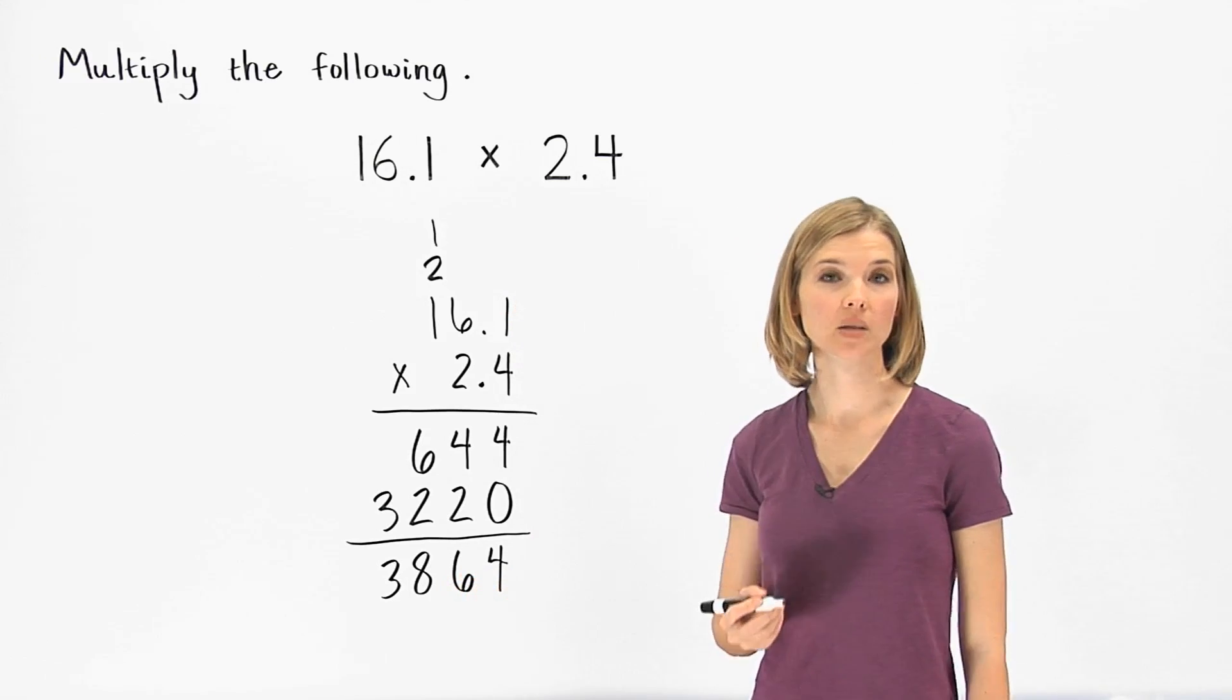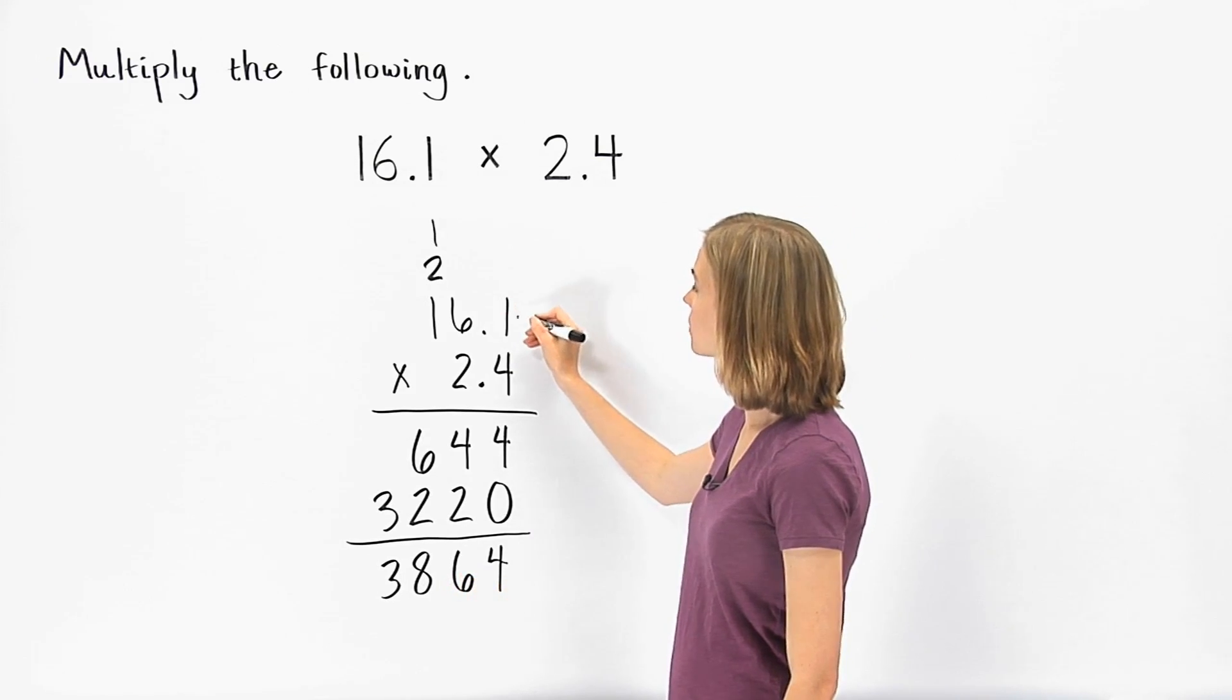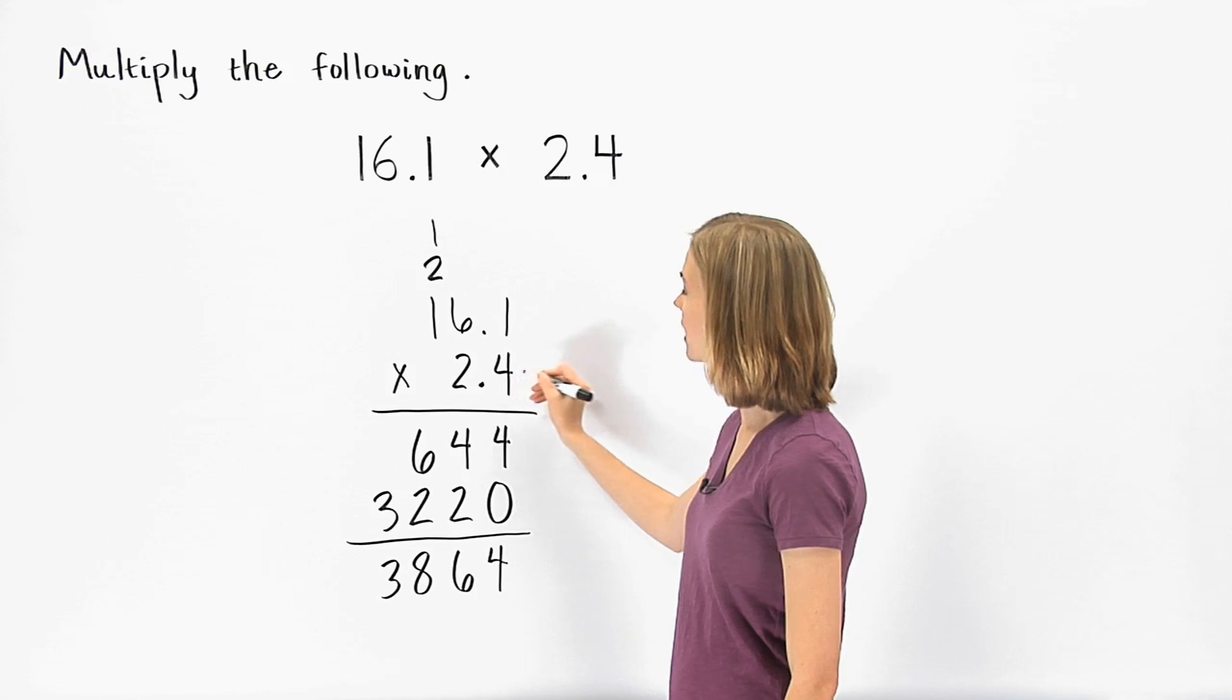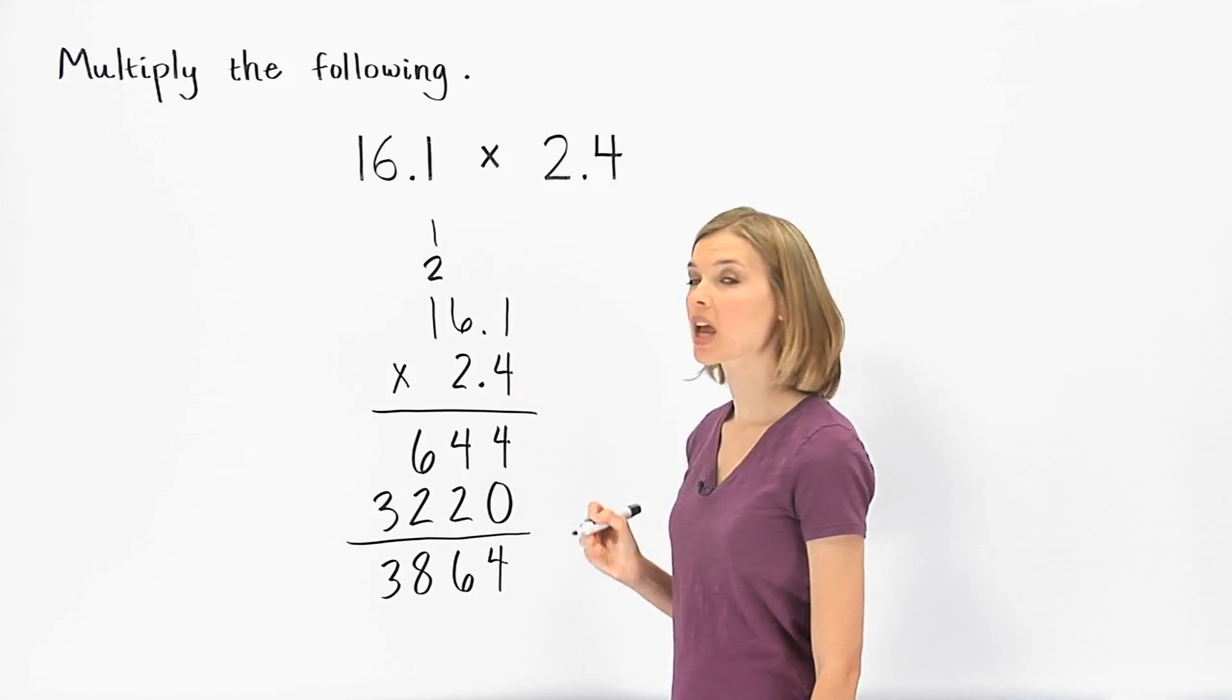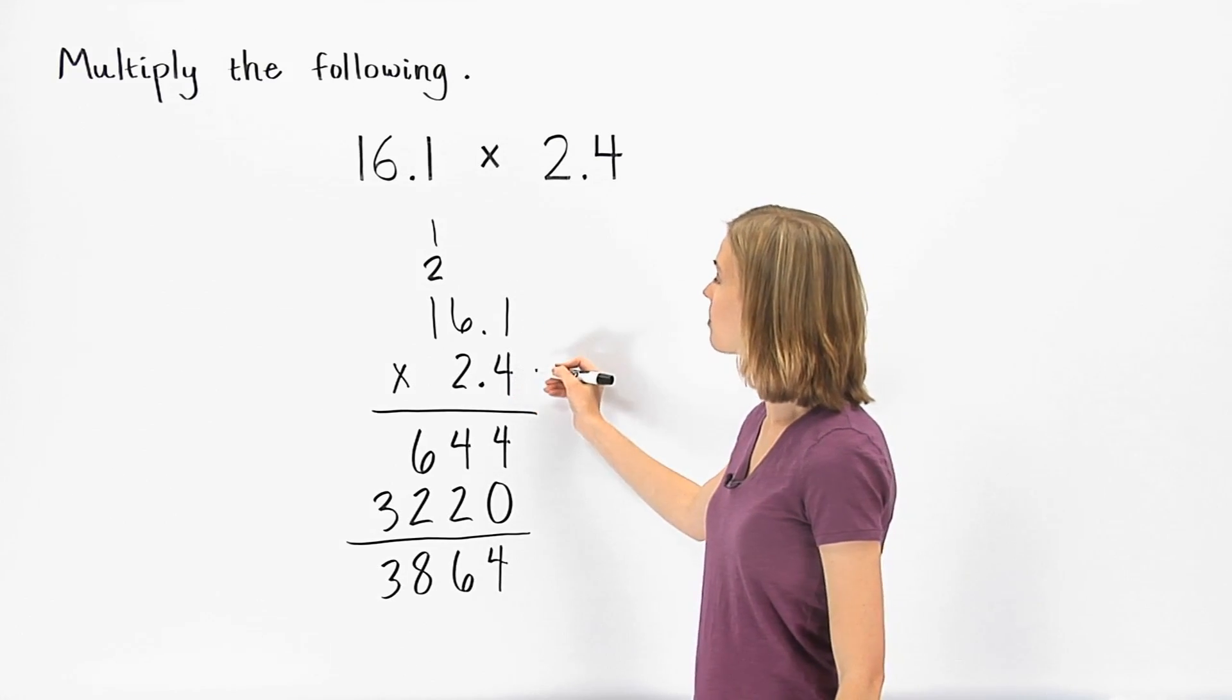Finally, we determine where the decimal point goes in our answer. Since 16.1 has one digit to the right of the decimal point, and 2.4 has one digit to the right of the decimal point, we have a total of two digits to the right of the decimal point in our original numbers.